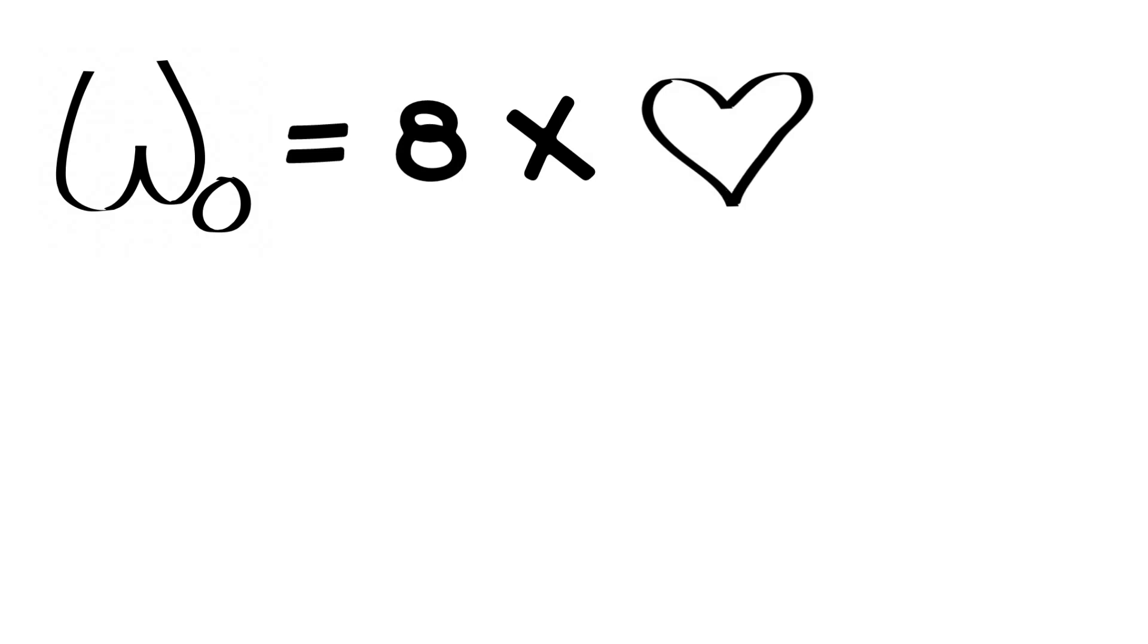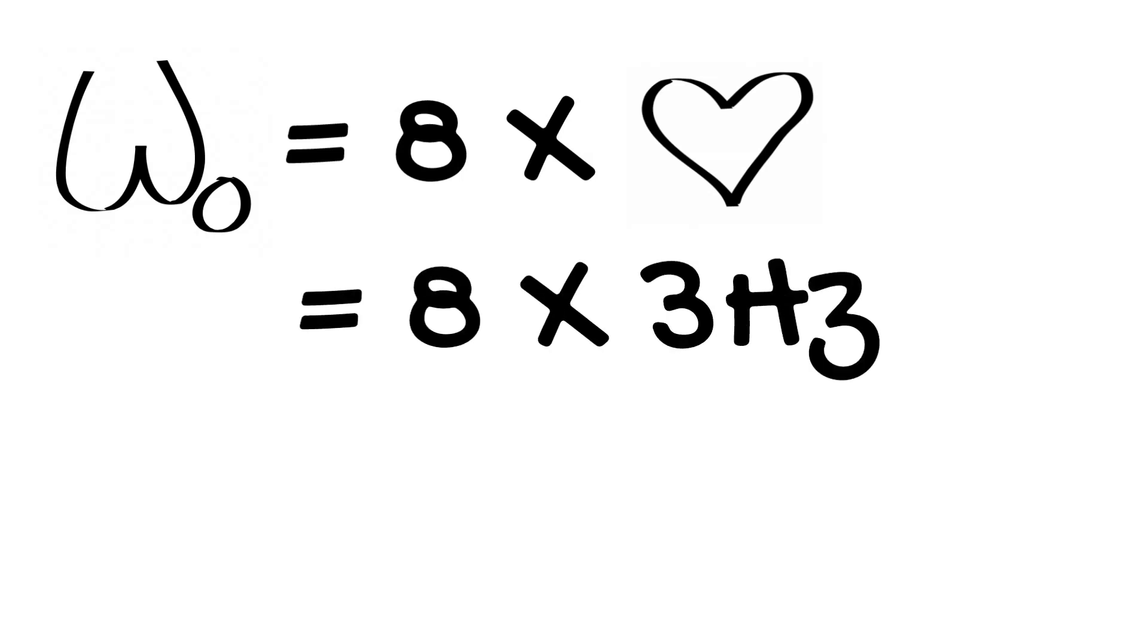If the fastest heart rate we are measuring is 180 beats per minute, that is 3 hertz. If we multiply that by 8, the frequency of our system has to be at least as high as 24 hertz.